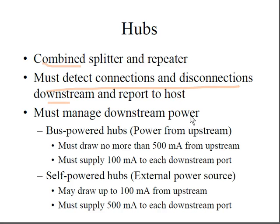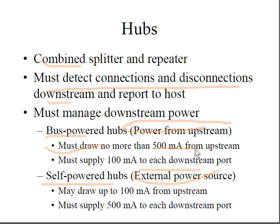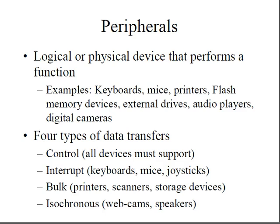Hubs come in two types: bus-powered and self-powered. Bus-powered hubs must draw no more than 500 milliamperes from upstream and must supply 100 milliamperes to each downstream port. Self-powered hubs may draw 200 milliamperes from upstream and must supply 500 milliamperes to each downstream port, using an external power source.